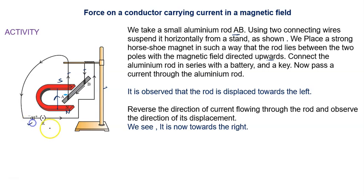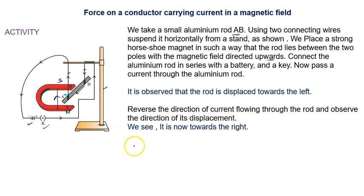We connect the aluminum rod in series with a battery and a key. When we plug the key, current flows through the wire and through the aluminum rod. We observe that as the current begins to flow, the rod is displaced towards the left.